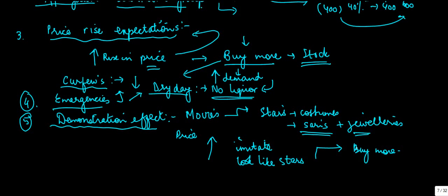Why? Because people try to imitate and buy these as a measure of showing their status. So these were the five reasons, these were the five exceptions to the law of demand, in which basically, even if the price of a commodity increases, its demand also goes up.